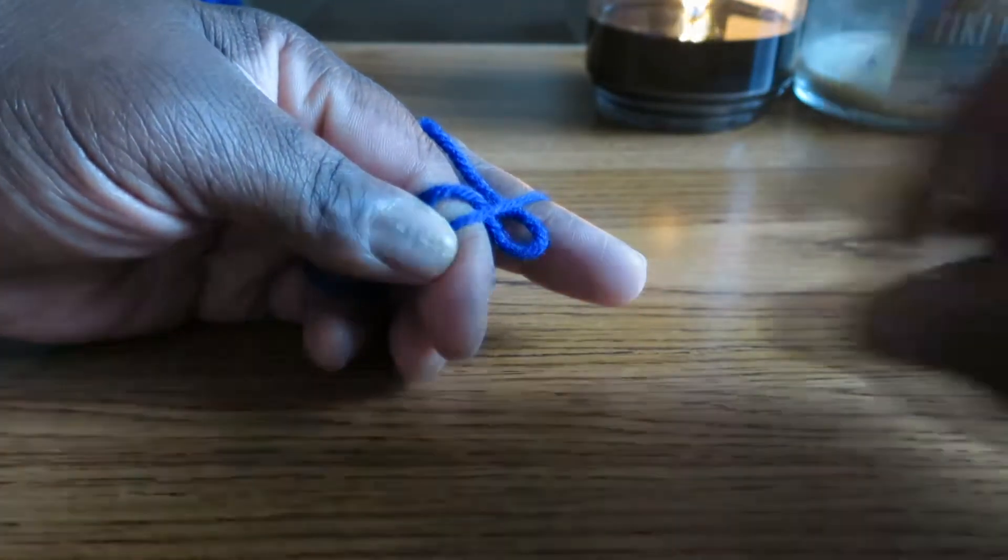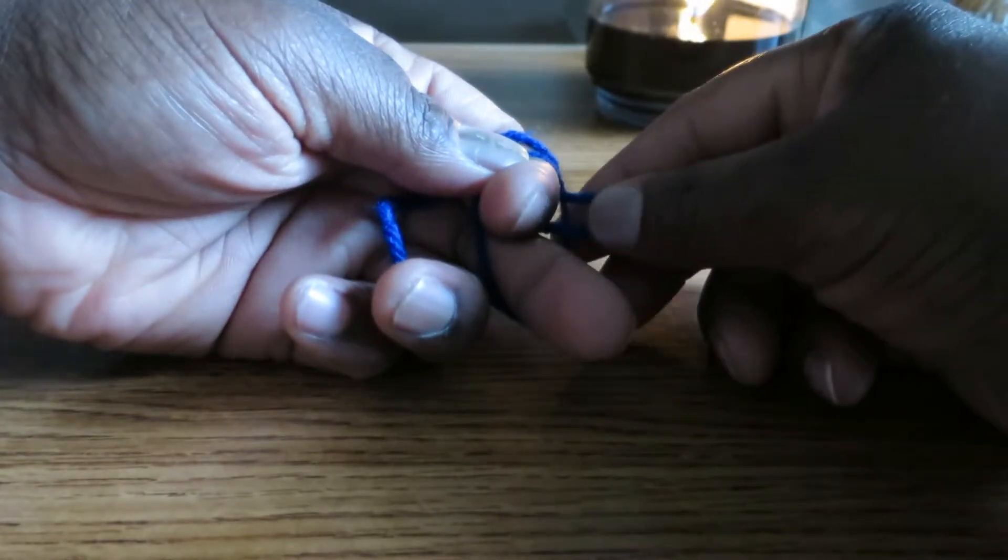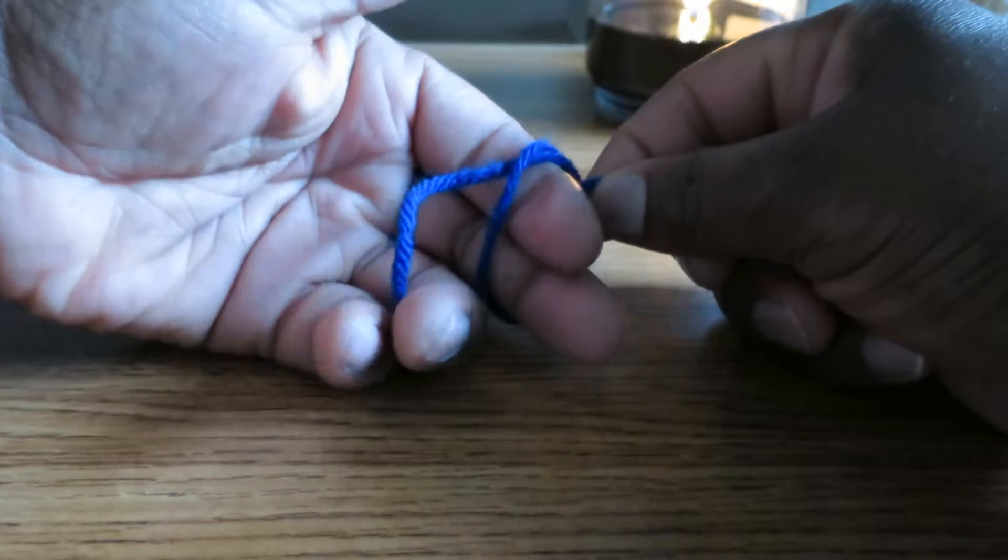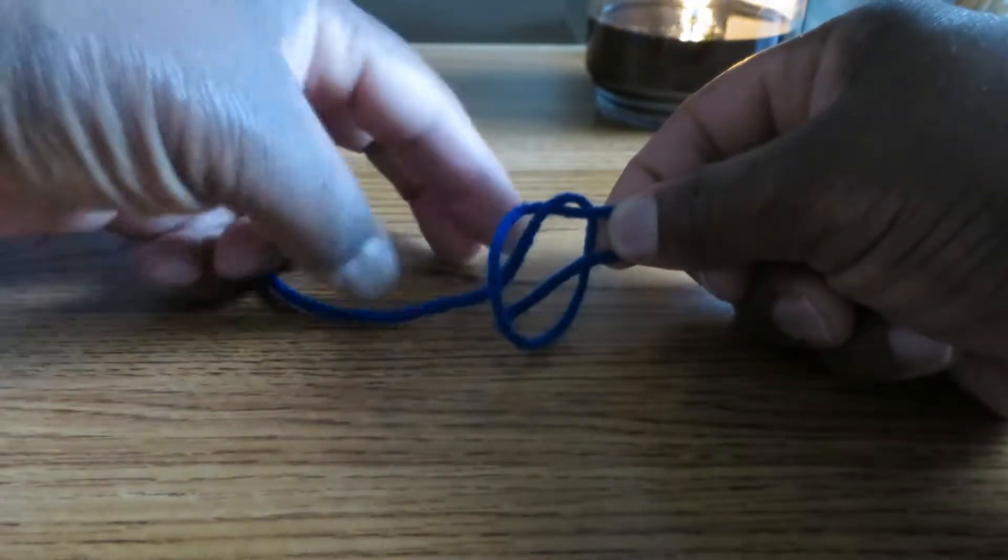So you have a little loop. Now let's go back to this view. You'll hold on to the loop like that. And as you're holding on to that loop, you're going to slide very gently the two fingers out.